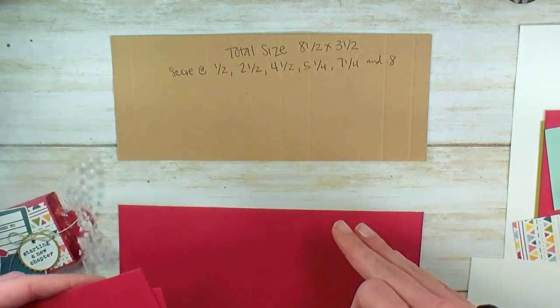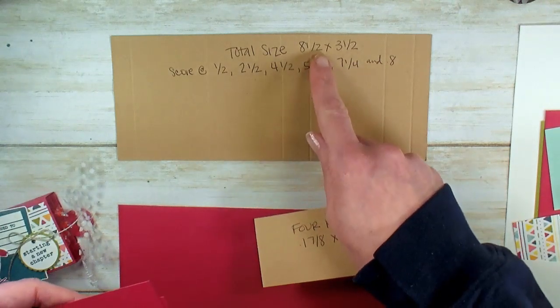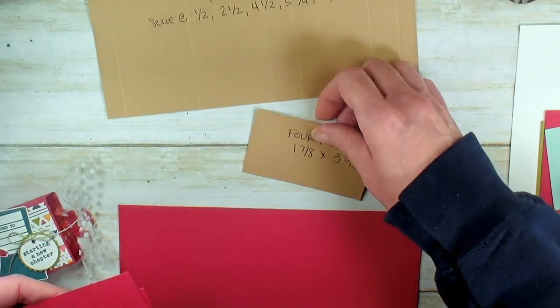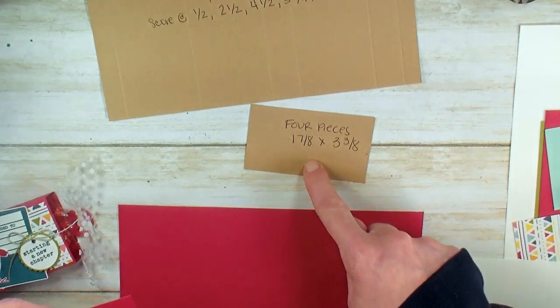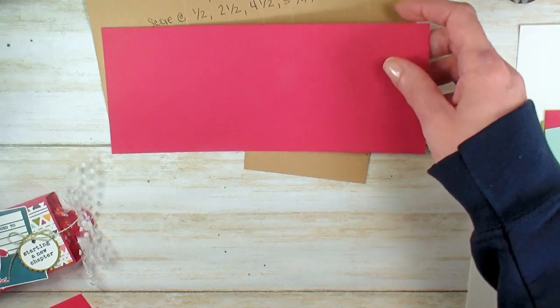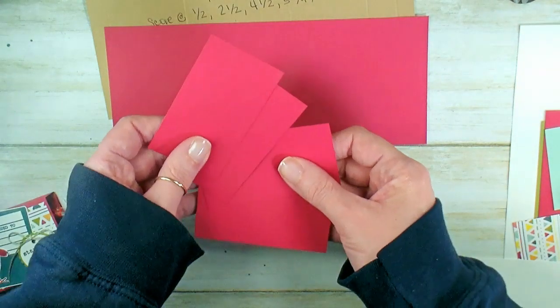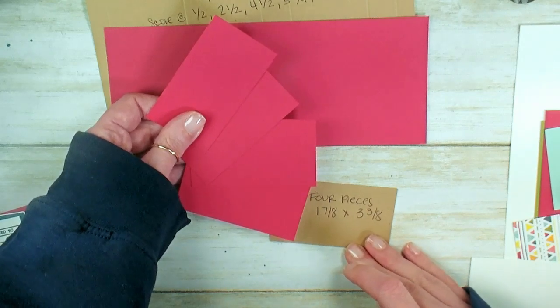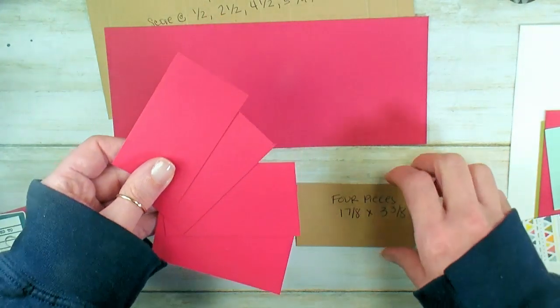The total size of our wrapper is 8 1⁄2 by 3 1⁄2, and you need four panels that are 1 7⁄8 by 3 3⁄8. So here's our lovely lipstick 8 1⁄2 by 3 1⁄2, and four lovely lipstick panels.